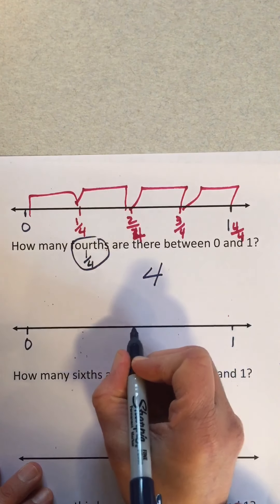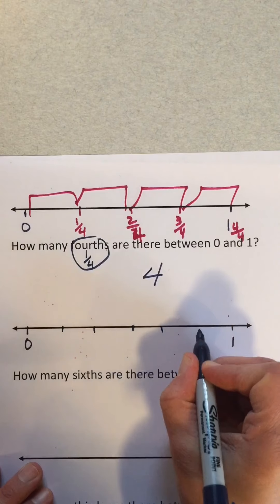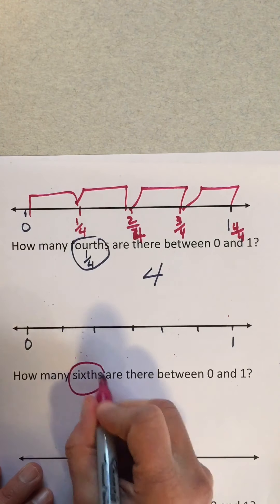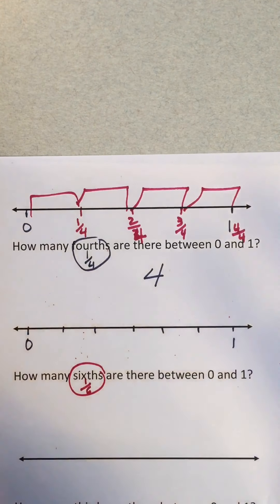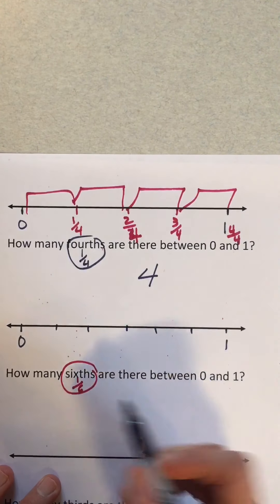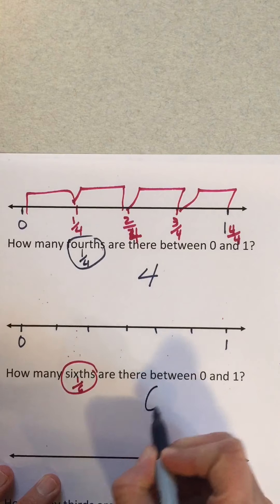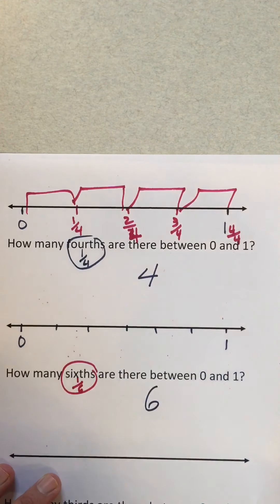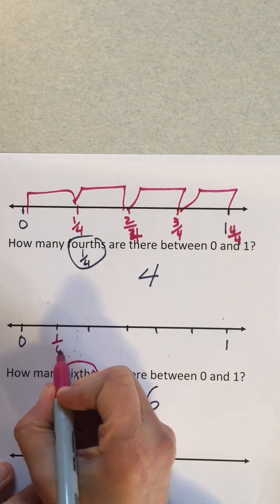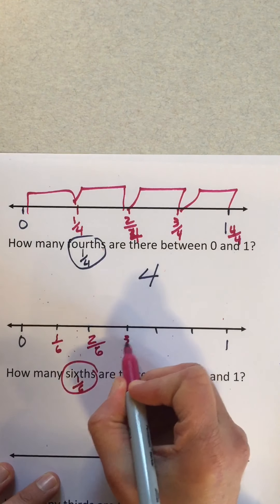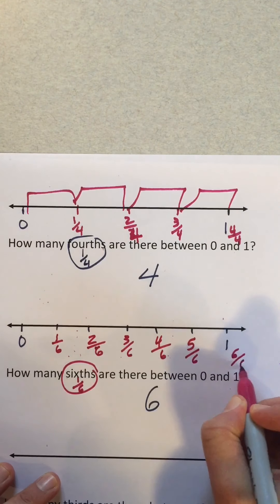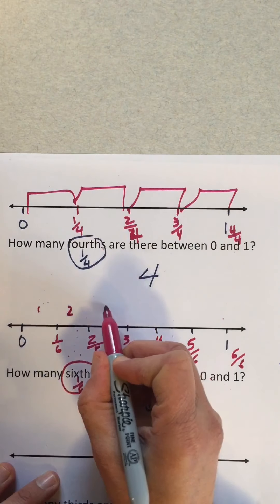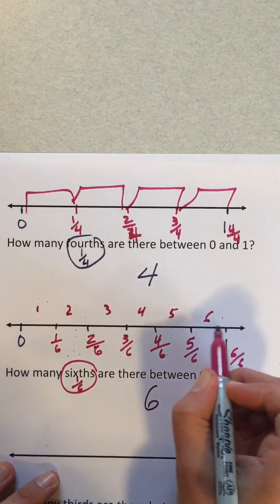How many sixths do I have? Here's zero and here's one. Sixth looks like this: one over six. You might know the answer — the whole is six, so it's six. If you don't know, you can draw it on a number line: one sixth, two sixths, three sixths, four sixths, five sixths, six sixths. One part, two parts, three parts, four parts, five parts, six parts — six of them.